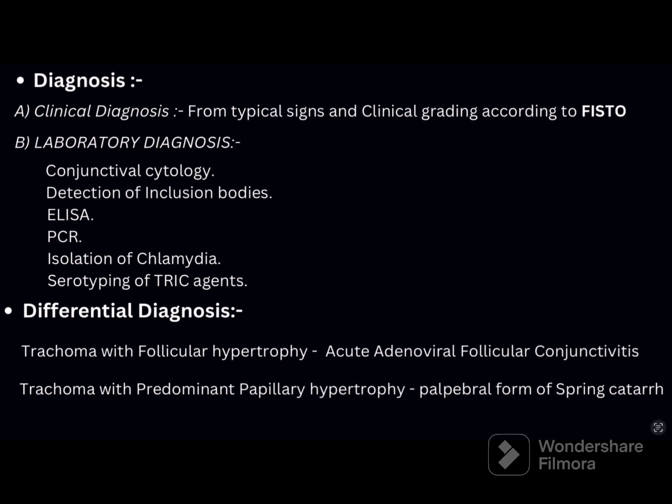For diagnosis: clinical diagnosis is based on typical signs and symptoms, graded according to FISTO classification. Lab diagnosis employs advanced tests used mainly for research. Conjunctival cytology: conjunctival discharge is taken, Giemsa stain smear is done — it shows predominantly polymorphonuclear reaction with presence of plasma cells and Leber cells, which is suggestive of trachoma.